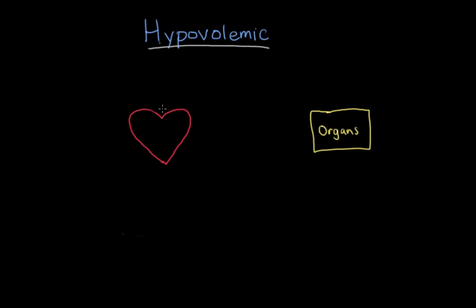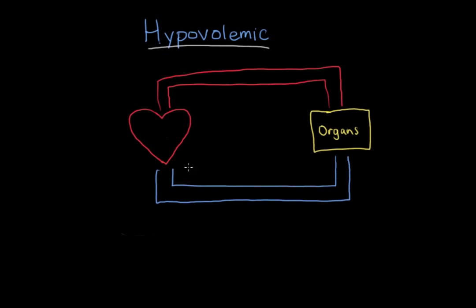So I'm gonna write organs over here. And between the heart and organs, we have the vascular space. We've got arteries delivering blood to organs, and veins returning blood back to the heart from the organs. So I've got this oversimplified cardiovascular system, but this will do the trick to understand hypovolemic shock.